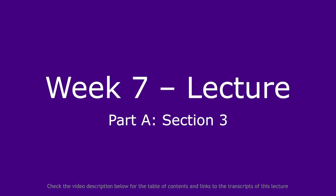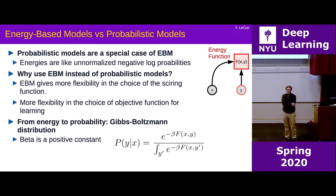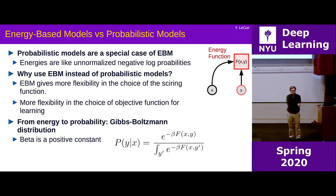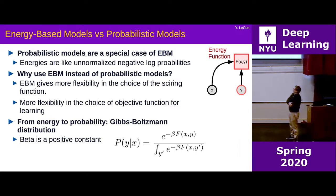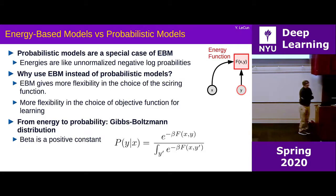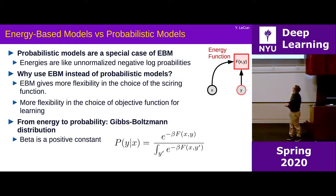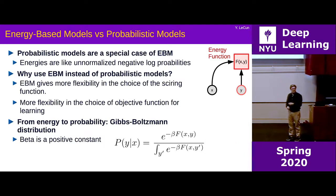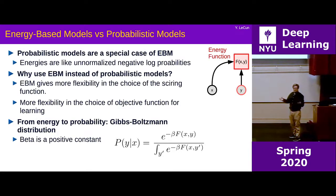Now let's connect this with probabilistic modeling. There's a way to turn energies — which you can think of as negative scores, since low energy is good and high energy is bad — into probabilities. The way to turn energy into probabilities, which we discussed a little, is to use the Gibbs-Boltzmann distribution. Going back to classical statistical physics of the 19th century: P(Y|X) = exp(-β·F(X,Y)) divided by a normalizing constant, where β is a parameter. This takes exponentials — making energies into positive numbers — and the minus sign turns low energy into high probability.